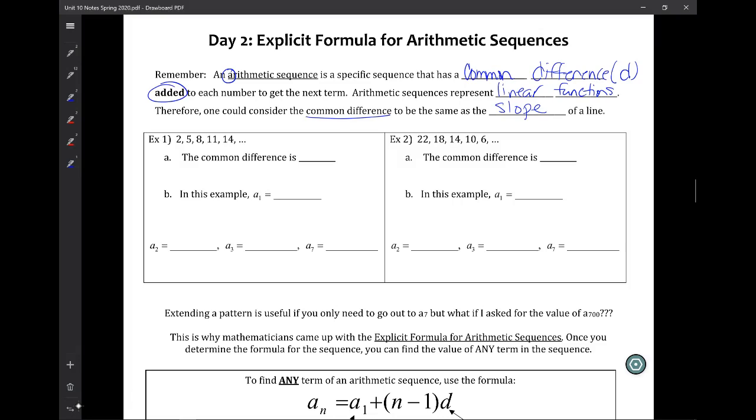If we look at our first list of numbers: 2, 5, 8, 11, 14, and so on, the common difference is adding 3 every time. So our common difference is positive 3. A1 represents the value of the first term, which is 2. If I continue this pattern out to find the seventh term, I get 17, then 20, then 23. So the seventh term is 20.